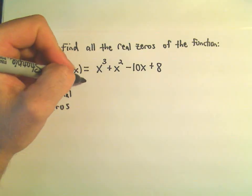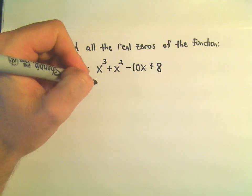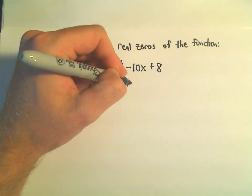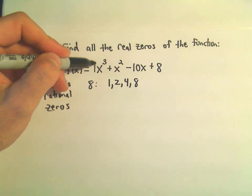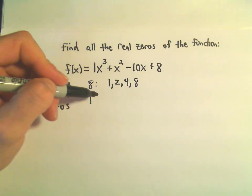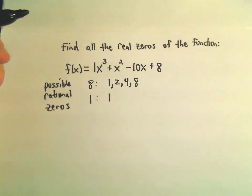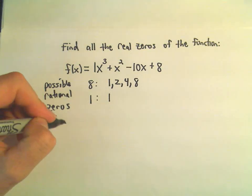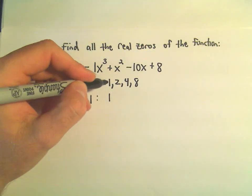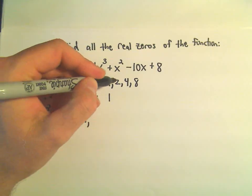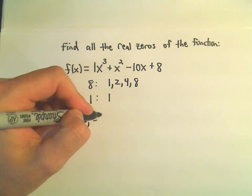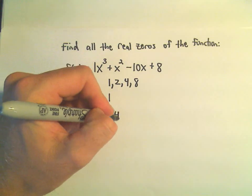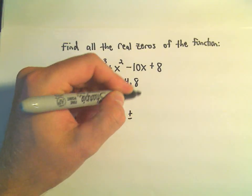So remember, we look at factors of the constant. If we look at factors of 8, we would get 1, 2, 4, and 8. If we look at factors of the leading coefficient, well, the factors of 1 are just 1. And then the possible rational zeros would either be positive or negative 1 over 1, positive or negative 2, positive or negative 4, or positive or negative 8.